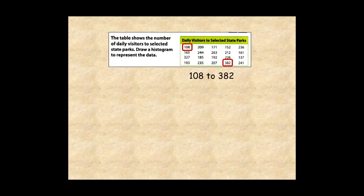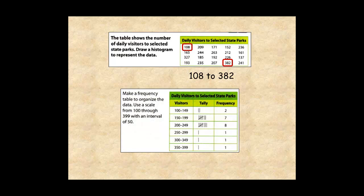So next, create a frequency table, ranging from 100 to 400, with intervals 50 units wide.